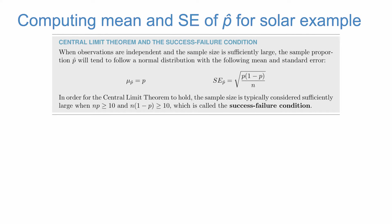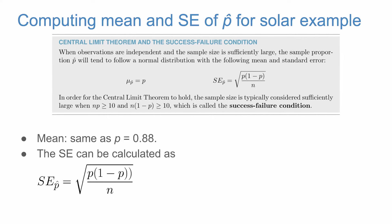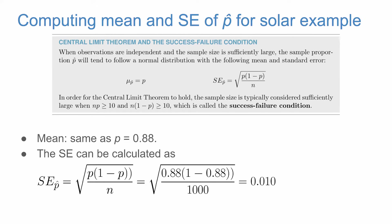Let's use the central limit theorem to compute the mean and standard error associated with the sample proportion for the solar example. The mean is the same as the population proportion, which is 0.88. We can also calculate the standard error by plugging in p = 0.88 and n = 1,000 into the formula. Running through that formula gives us 0.01 — exactly what we observed in our simulation.